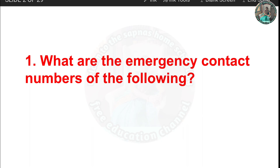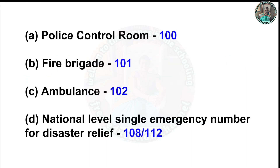Question one: What are the emergency contact numbers of the following? Police Control Room: 100. Fire Brigade: 101. Ambulance: 102. National level single emergency number for disaster relief: 108 or 112.